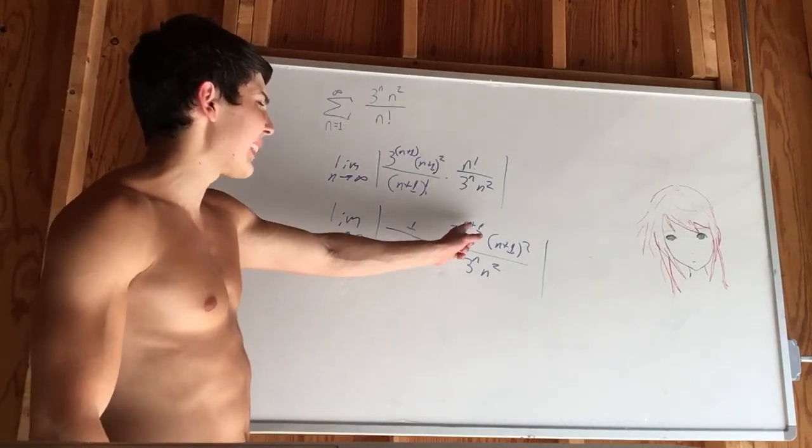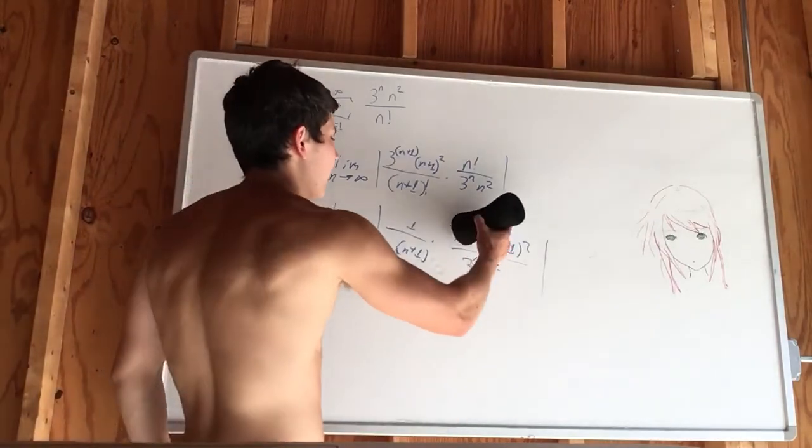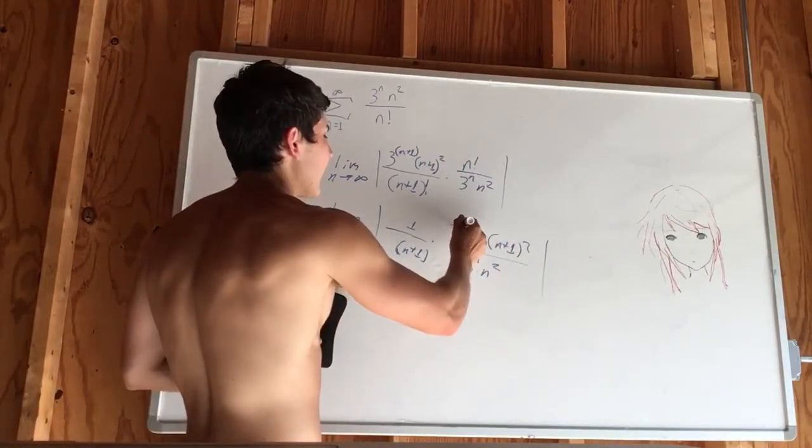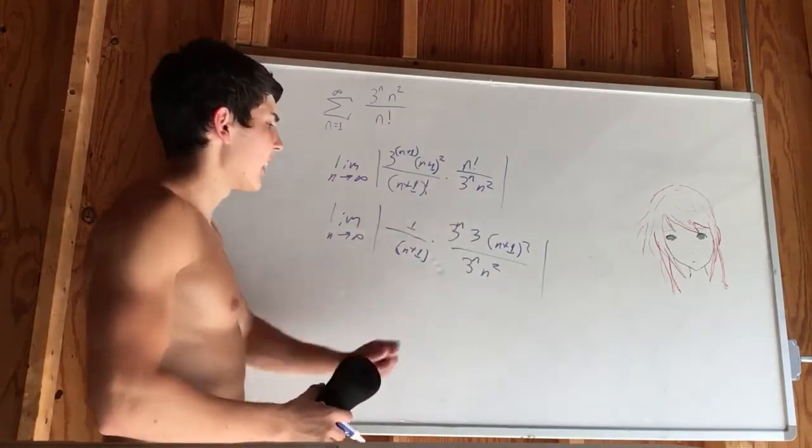On this side we have 3 to the n times 3, which is 3 to the n plus 1, giving us another target to eliminate.